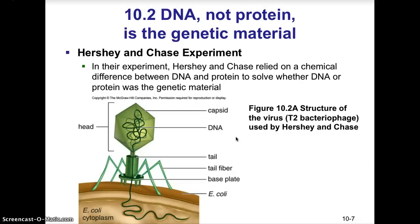This raised the question: what caused that transformation — was it DNA, RNA, or a protein molecule? To answer that, we turn to the Hershey and Chase experiment. Alfred Hershey and Martha Chase used the T2 bacteriophage — a virus that infects bacteria — which has a protein coat on the outside and DNA inside the head region, to determine whether DNA or protein was the genetic material.